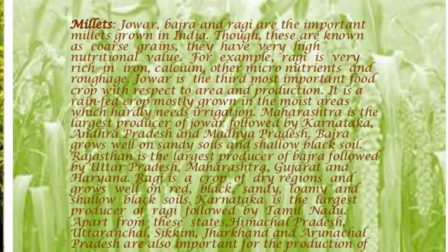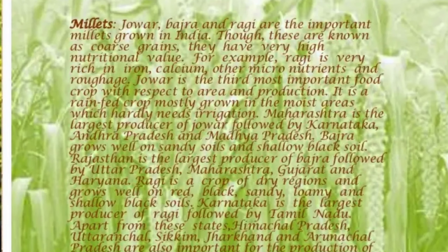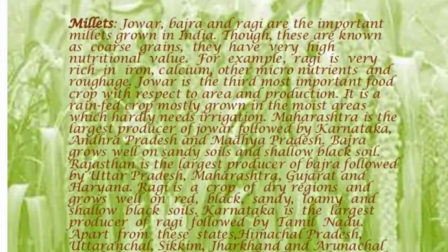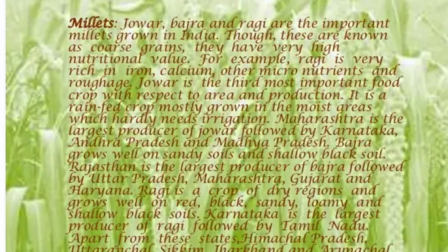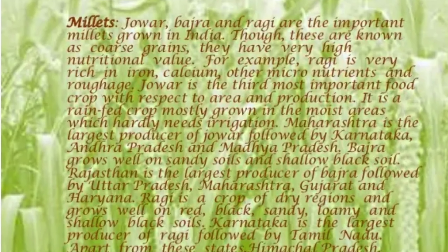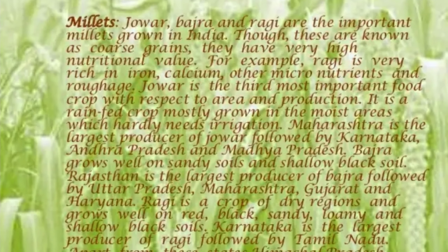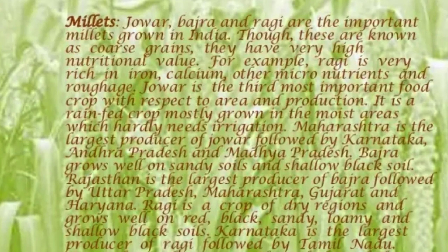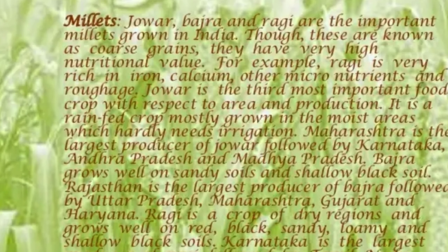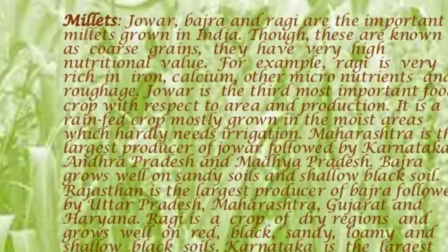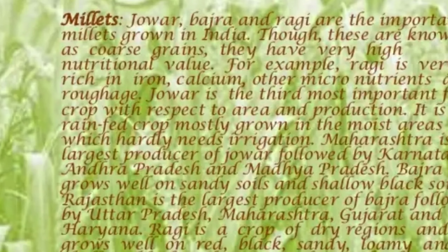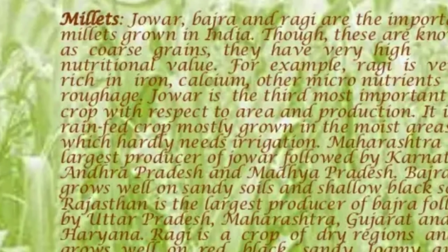Millets — jowar, bajra, and ragi — are the important millets grown in India. They are also coarse grains and have more nutritional value. Ragi is very rich in iron and calcium. It is a rain-fed crop and grows in Maharashtra, Karnataka, Telangana, Andhra Pradesh, and Madhya Pradesh in summer. Bajra grows well on sandy soil. Read page number 61 carefully, paragraph by paragraph, to understand. Reading is a must — knowledge comes from reading.